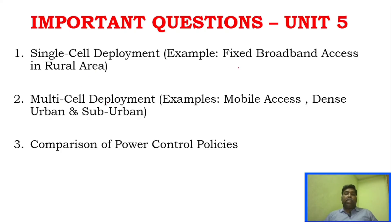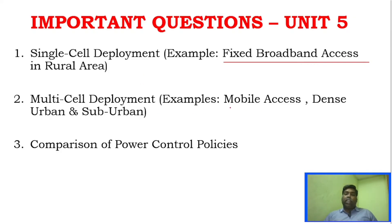For Unit 5, the important questions are: single cell deployment — fixed broadband access in a rural area. Multi-cell deployment covers three scenarios: mobile access, dense urban, and suburban. These are implementation-based questions. Also study the comparison of power control policies. Unit 5 will likely have around three questions in Part B and Part C.